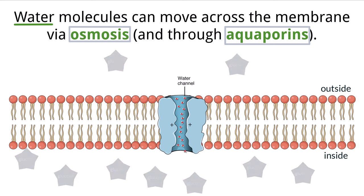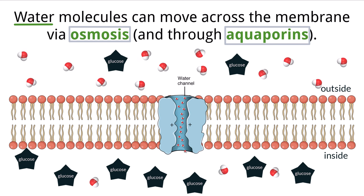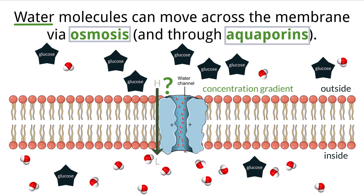Let's say the cell has a high concentration of sugar molecules inside it compared to the outside, and therefore a low amount of water on the inside compared to the outside because the sugar is taking up more space. We call this a concentration gradient, as there are different concentrations of a substance on either side of the cell membrane. Based on this, water will move in — from high concentration outside to low concentration inside — because water always moves down its concentration gradient from high to low.